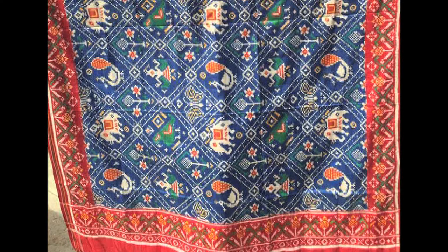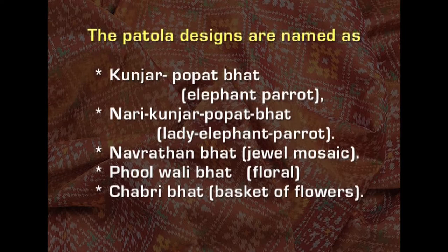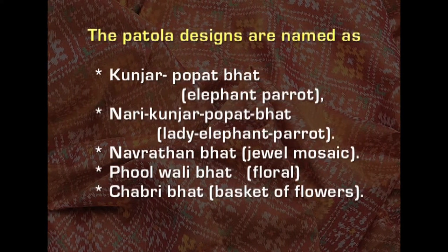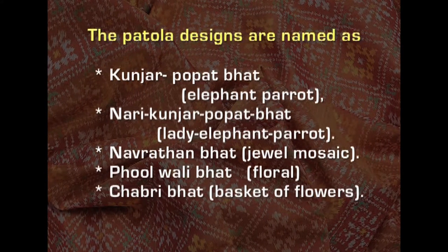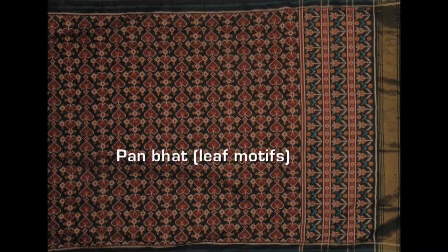The distinctive motifs used for Patola weaving include flowers, elephants, birds and sometimes dancing women. If Patolas are intended for the Muslim community, they are mostly woven with abstract or geometric designs. The Patola designs are named as Kunjar, Popat Bhat meaning elephant-parrot, Nari Kunjar Popat Bhat meaning a lady, elephant and parrot, and also patterns meaning jewel mosaic, floral pattern and basket of flowers. The elephant and tiger motifs are considered auspicious. The Paan Bhat, or beetle leaf, is one of the most frequent patterns used for making a Patola.